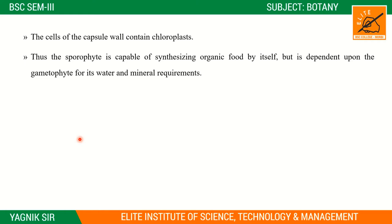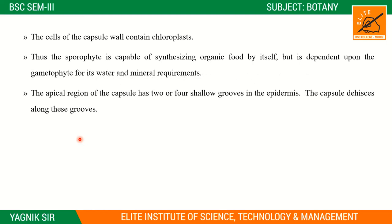However, although the sporophyte can photosynthesize, it is still dependent upon the gametophyte for its water and mineral requirements. Water is important in the process of photosynthesis, and the water passes from the gametophyte to the sporophyte.